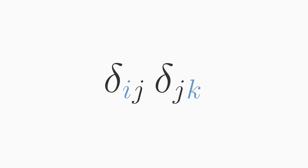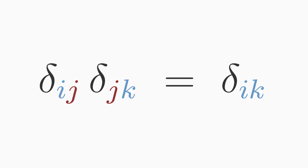Rule number two. If the product of two or more Kronecker deltas contains a summation index, like in this case j, then the product can be shortened such that the summation index j disappears. Delta ij times delta jk is equal to delta ik. So instead of writing two deltas, you can just write delta ik. We say the summation index j is contracted.